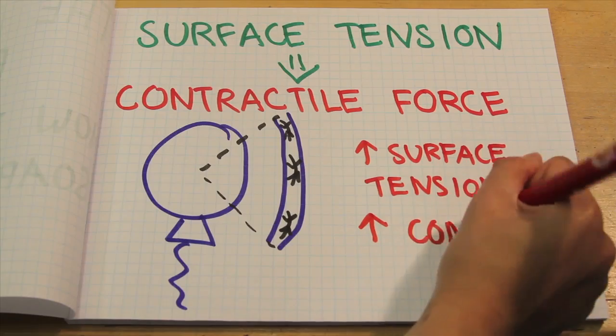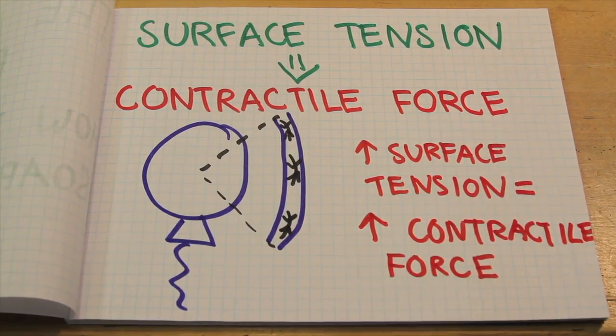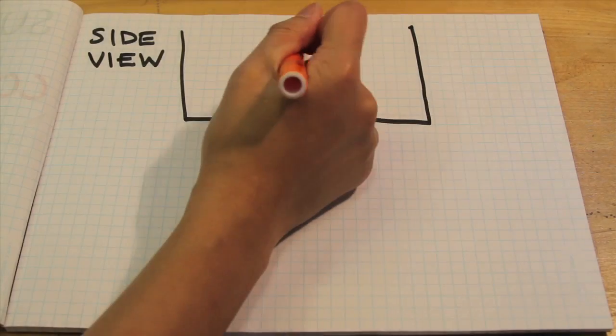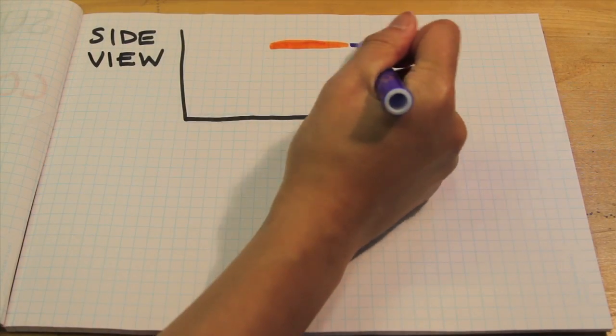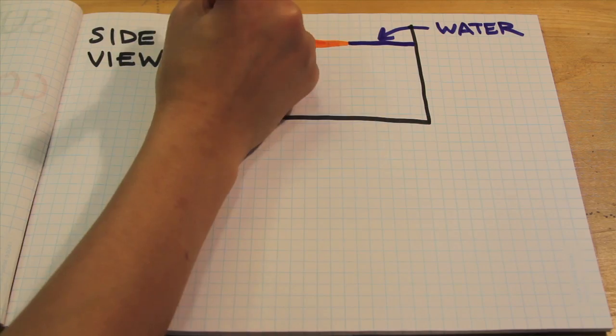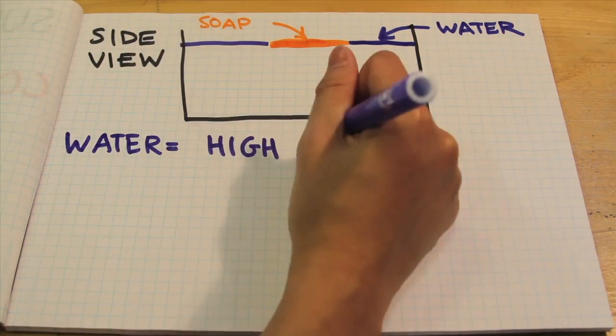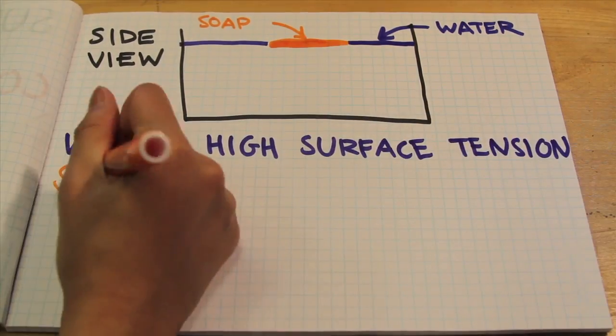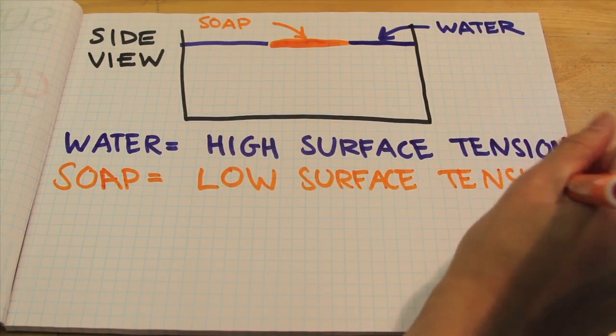If a liquid has a high surface tension, it means that this contractile force is high. What happens when you put a drop of liquid with a low surface tension in a bath of liquid with a high surface tension? Let's use water and soap as an example. Water has a high surface tension while soap has a low surface tension.